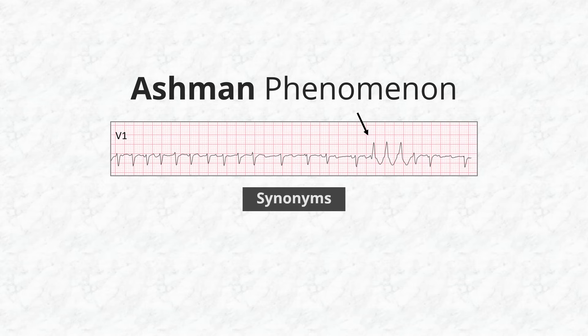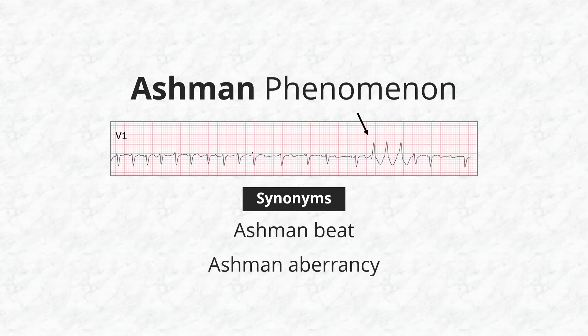Ashman Phenomenon is also known as Ashman Beat and Ashman Aberrancy. This phenomenon is mainly of academic interest, because clinically it is not symptomatic on its own, and there is no treatment for it.